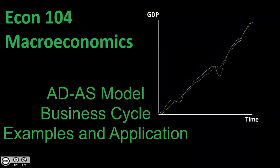Welcome back to Econ 104, Introduction to Macroeconomics. In this video, we're going to be taking a look again at our aggregate demand, aggregate supply model. We're going to briefly talk about some theories of the business cycle — why does the business cycle happen, why do we have these ups and downs? Then we'll wrap up by taking a look at some examples and applications: real world events from the last decade or so and modeling their impacts.